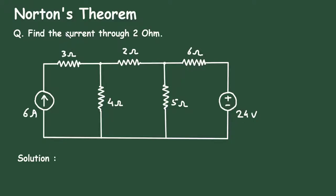To get the free notes of electrical circuits, check the link in the comment section and install the app for free. Norton's Theorem — Question: Find the current through 2 Ohm. Here in this circuit, we have to find the current through this 2 Ohm resistance by using Norton's theorem.